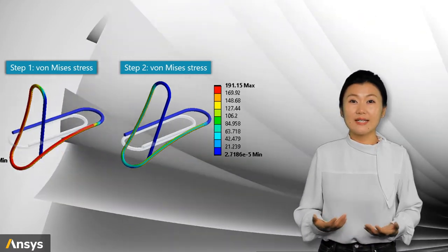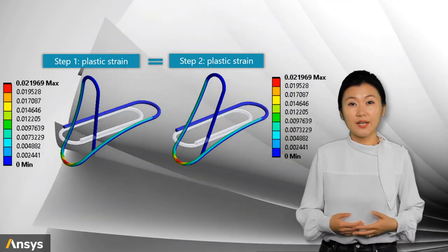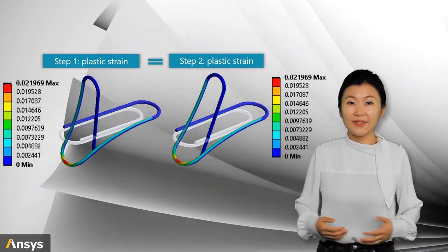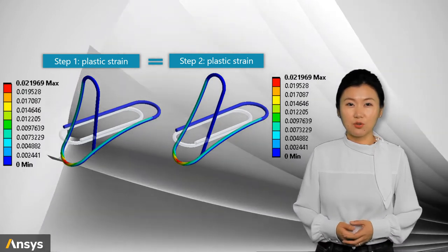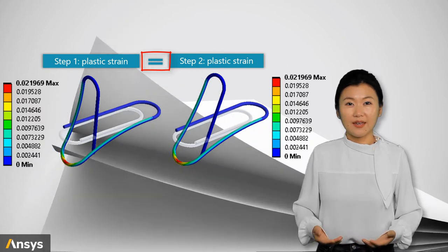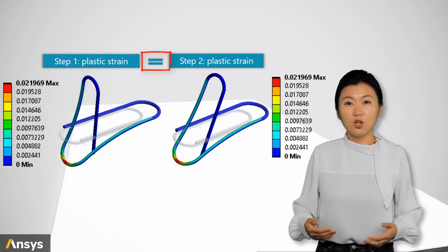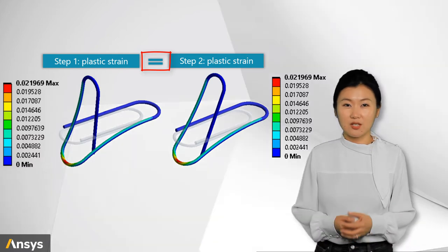Now, let's have a look of the plastic strain. Plastic strain is a direct indicator of plasticity. At the ends of step 1 and step 2, the paper clip has exactly the same plastic strain distribution. Again, this is because plastic deformation is not recoverable. Once developed in the material, it will never disappear.